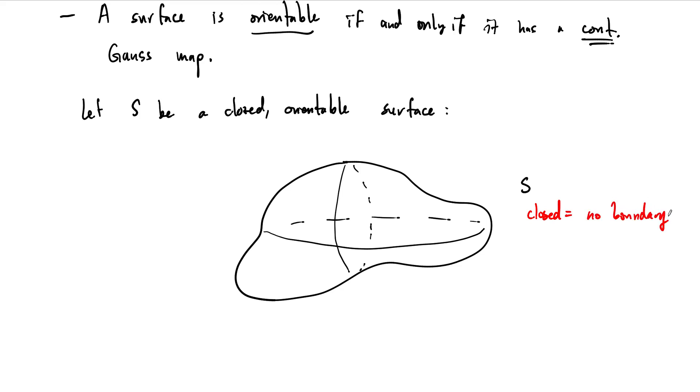And orientable means that as we assign our normal vectors they change continuously. I'm trying to draw some of these pointing out toward us. The idea though is that they are changing continuously. Probably this one is not going to look like that, but the idea is the same.